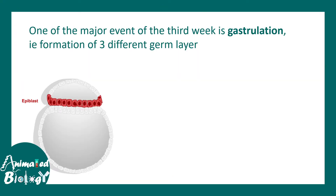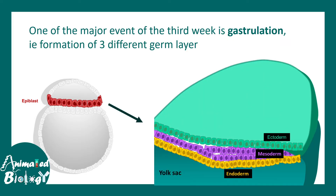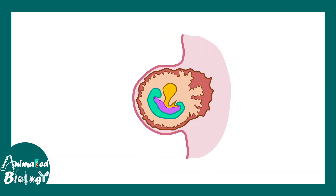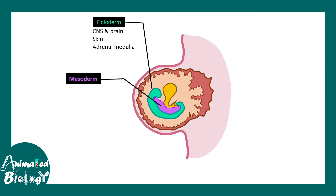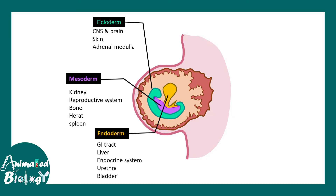One of the major events in the third week is gastrulation, which means the formation of three different germ layers. So let us begin our journey from this particular stage. From the epiblast, three different germ layers are formed: namely ectoderm, mesoderm, and endoderm. From these three germ layers, ectoderm is the layer which would form the central nervous system and the brain. Mesoderm and endoderm form other systems, so here we need to focus on ectoderm.